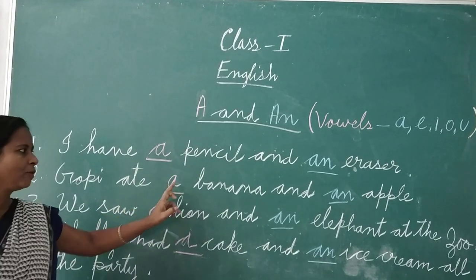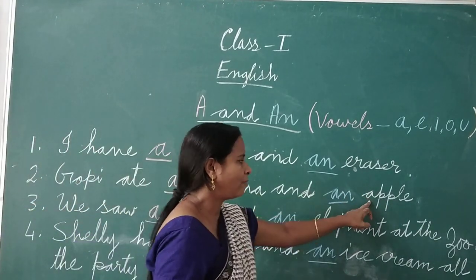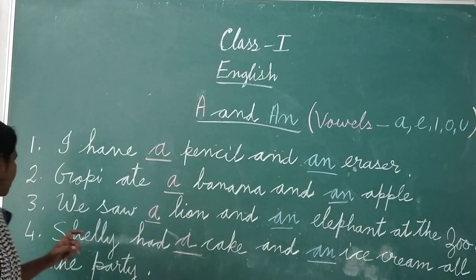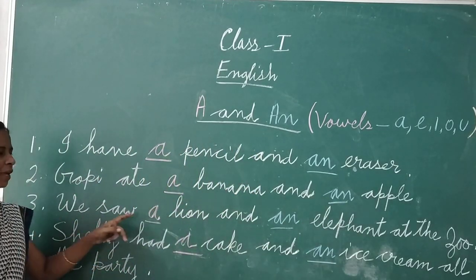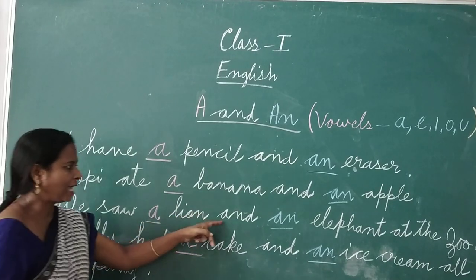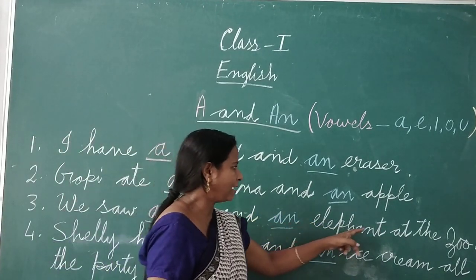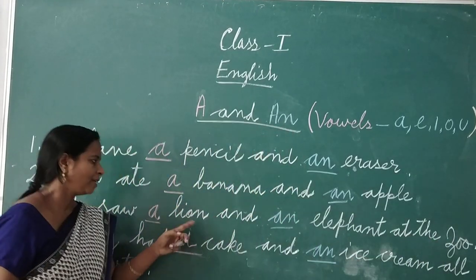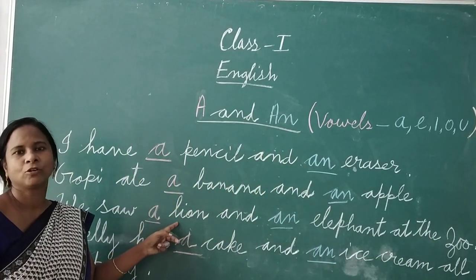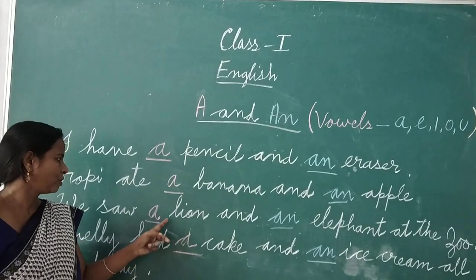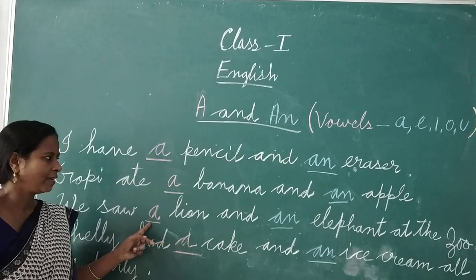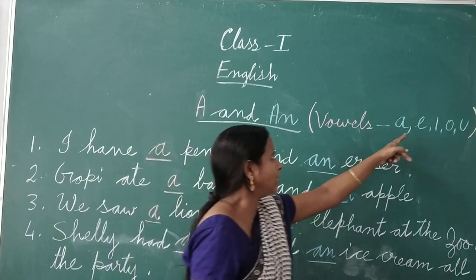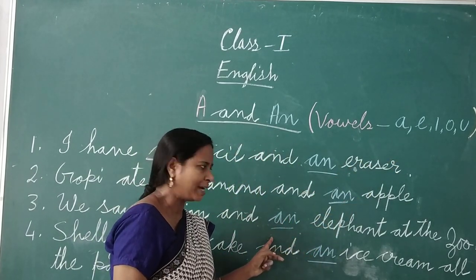In another sentence, the word starting with a consonant alphabet uses 'a'. For example, Zion starts with a consonant, so we use 'a'. And elephant starts with a vowel, that is why we use 'an'.